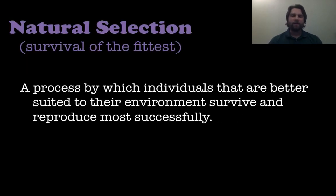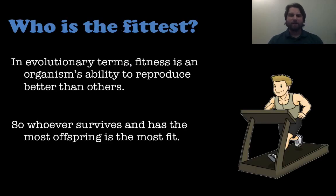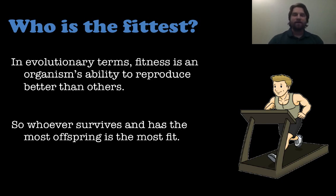So let's talk about what natural selection is. It's survival of the fittest — a process by which individuals that are better suited to their environment survive and reproduce. In evolutionary terms, fitness is the organism's ability to reproduce better than others. Whoever survives and has the most offspring is the most fit, because that organism has a trait better suited to its environment, allowing it to survive longer, reproduce, and pass those genetic traits on to its offspring.